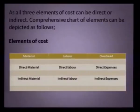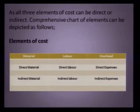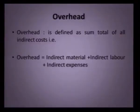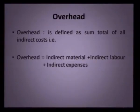As we discussed, there are three components of cost — material, labor, and expenses — and these three components can be classified as direct and indirect. So we can say there are six major components of cost: direct material, indirect material, direct labor, indirect labor, direct expenses, and indirect expenses. Overheads are basically indirect costs — they are the sum total of indirect material, indirect labor, and indirect expenses. All direct costs — direct material, direct expenses, and direct labor — are clubbed together and known as prime cost.